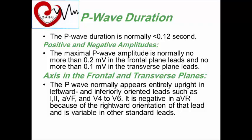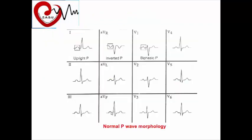Regarding P wave axis in the frontal and transverse planes: the P wave normally appears entirely upright and monophasic in the left and inferior limb leads — lead 1, lead 2, and AVF — and in leads V4 and V6. It is negative in AVR, because AVR is oriented toward the right shoulder, so all cardiac activity moves away from it, making P, QRS, and T waves all normally negative in AVR. Other leads, especially V1 and V2, may be biphasic.